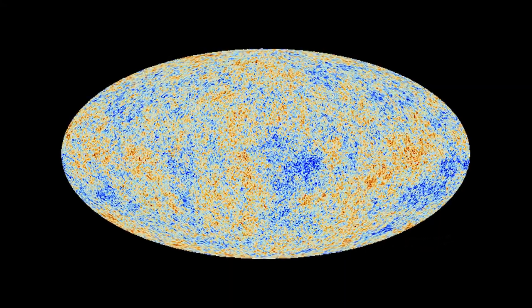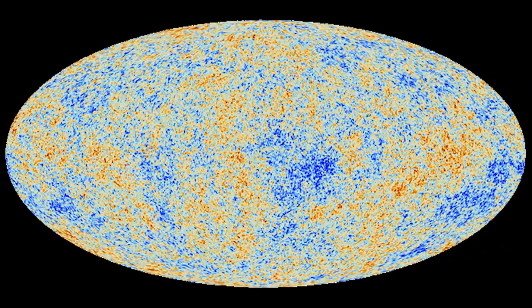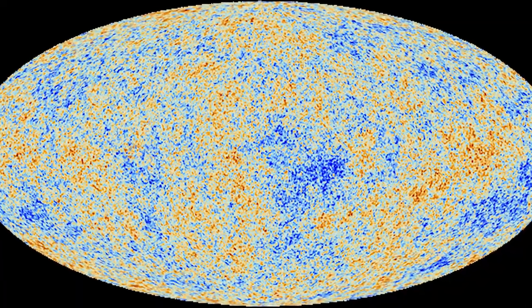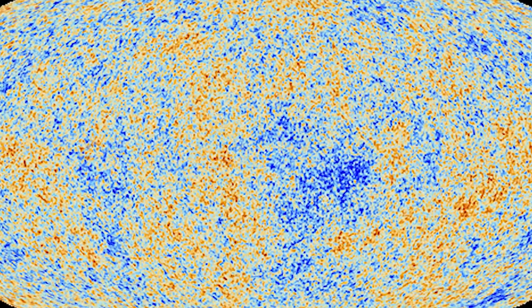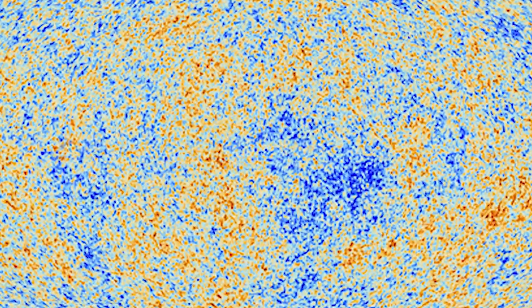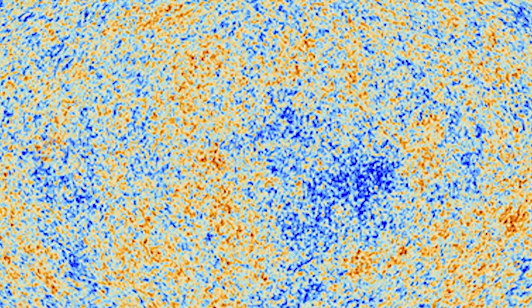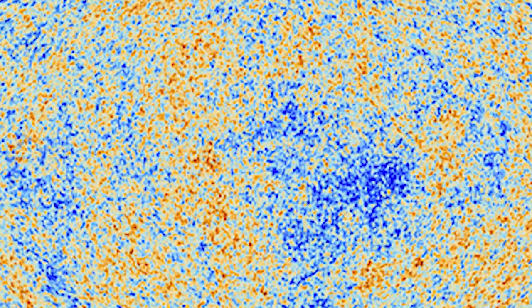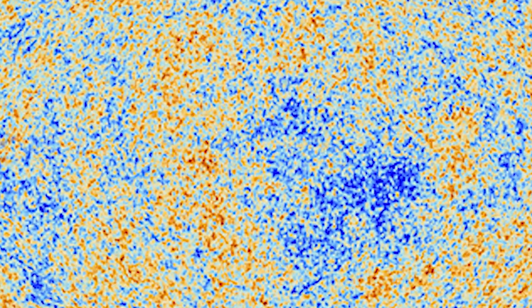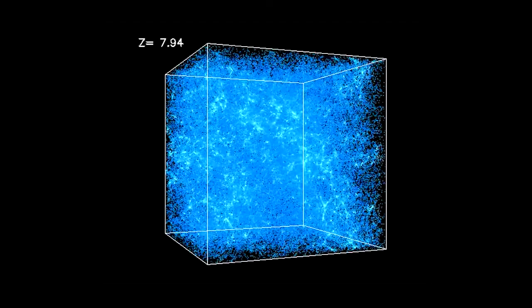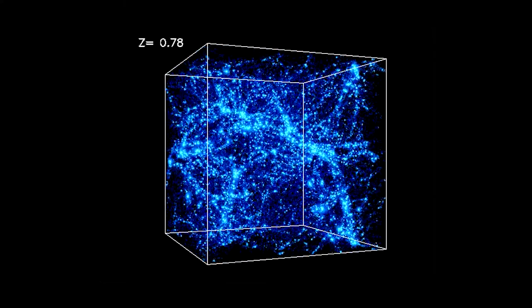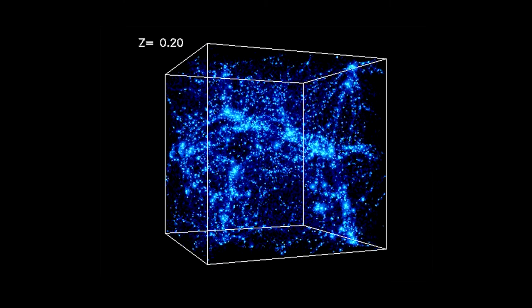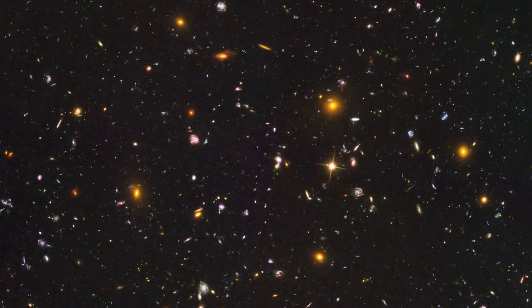This picture, a snapshot of our baby universe, is one of the most important observations in cosmology. First, it gives us clues about where all the structure in the universe, the galaxies, the galaxy groups, and the galaxy clusters come from. It marks the regions that were originally just a little bit more dense than their surroundings. These regions, with the help of gravity, start attracting more and more matter towards them, gradually building up to the largest structures we see in the universe today. Second, it gives us clues about the geometry of space.